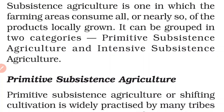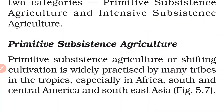Primitive subsistence agriculture involves shifting cultivation, which is widely practiced by many tribes in the tropics, especially in Africa, South and Central America, and Southeast Asia. अगर हम देखें तो primitive subsistence agriculture में shifting cultivation की जाती है, जो ज़्यादातर आदिवासी क्षेत्रों में अफ्रीका, South and Central America और Southeast Asia में देखने को मिलती है।